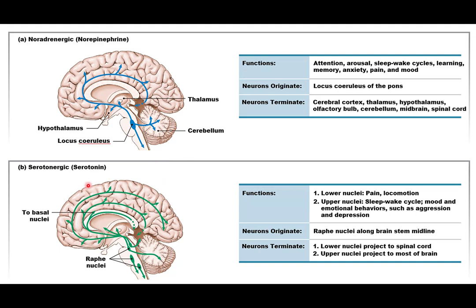The next behavioral state is the serotonergic, driven by serotonin. It has two main pathways: the lower nuclei in the lower brainstem, focused on pain and locomotion, and the upper nuclei, associated with sleep-wake cycles and mood and emotional behaviors like aggression and depression. They originate along the midline nuclei of the brainstem — the lower ones terminating in the spinal cord, and the upper ones terminating throughout the brain.